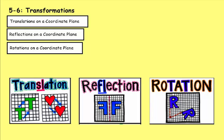We're on Lesson 6 of Chapter 5, which is Transformations. The transformations we're going to be looking at today are movements of objects or shapes across the coordinate plane. The three types of transformations we're going to look at are translations, reflections, and rotations.